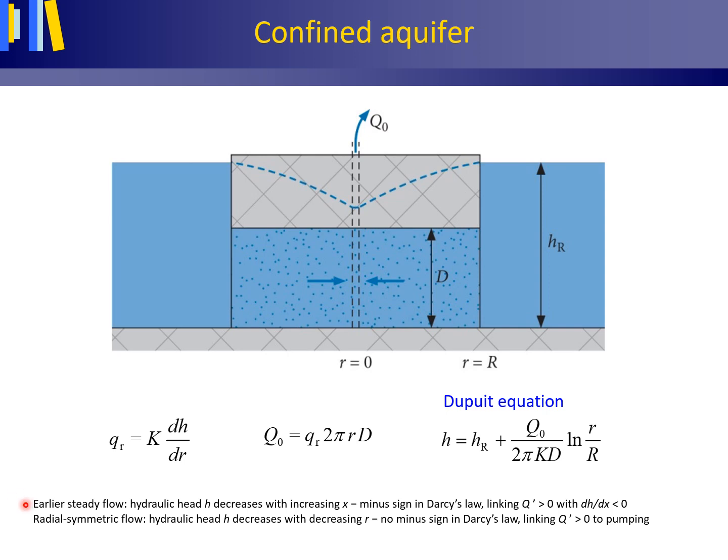In the earlier discussed steady groundwater flow cases, the hydraulic head H decreases with increasing positive x in the direction of flow, linking a positive volume flux with a negative hydraulic gradient and vice versa. Because of this, a minus sign is present in Darcy's law. However, in this radial symmetric steady groundwater flow case, the hydraulic head H decreases with decreasing — thus not increasing, but decreasing — small r in the direction of flow.